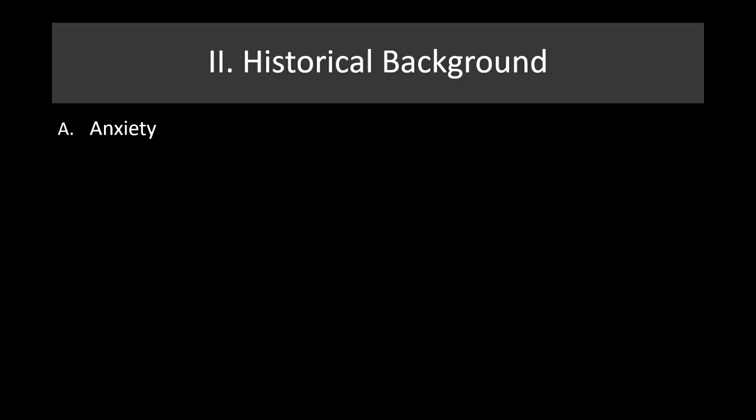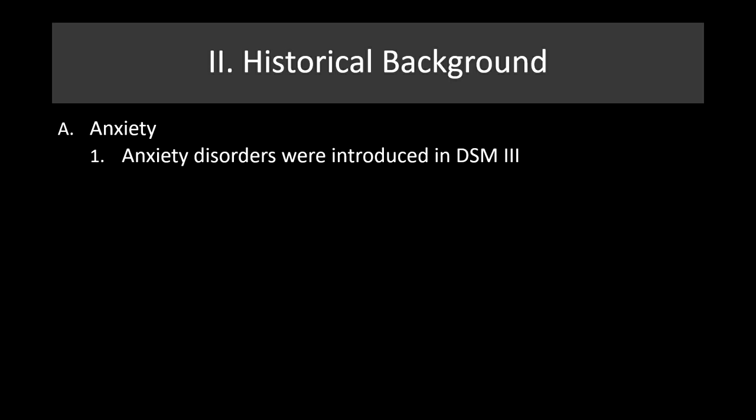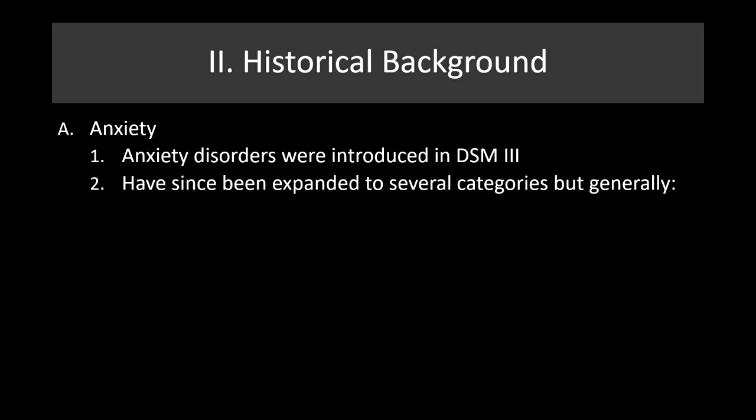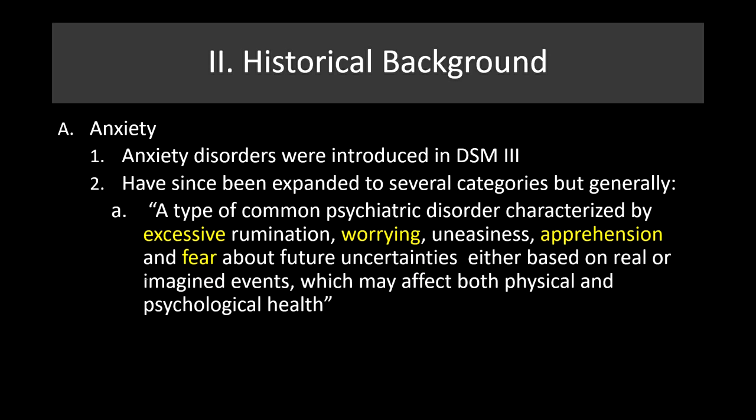A little historical background — first, anxiety. Anxiety disorders were first introduced in the DSM-3 and have since expanded to several categories. Generally, this is a common psychiatric disorder characterized by excessive rumination, where people constantly think about the same thing over and over. It involves constant worrying, uneasiness, apprehension, and fear about future uncertainties.